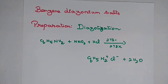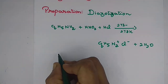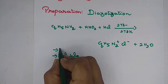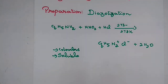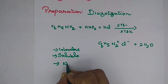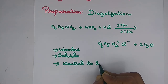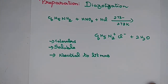Now the physical properties. It is a colorless crystalline solid. It is soluble in water. It is neutral to litmus — neutral to litmus paper. It conducts electricity.